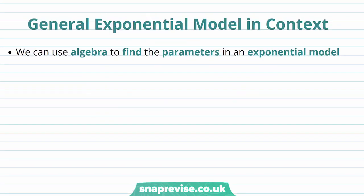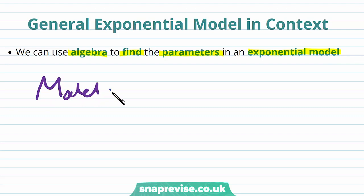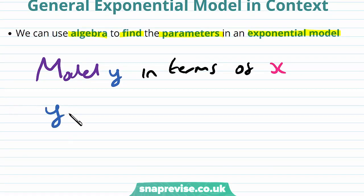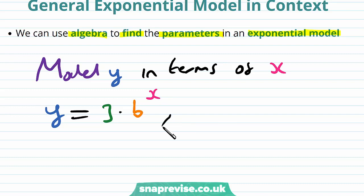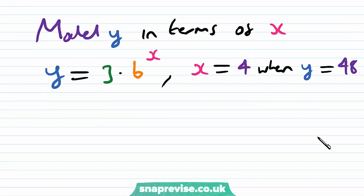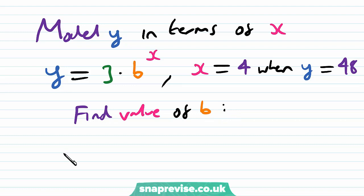So how can we interpret general exponential models in context? We can use algebra to find the parameters in an exponential model. Suppose we want to model the variable y in terms of a variable x. Let's say we have that y equals 3 multiplied by b to the power of x, where b is unknown, and we're given the data x equals 4 when y equals 48. Then we can use this information to find the value of b. We substitute in: 48 equals 3 multiplied by b to the power of 4.